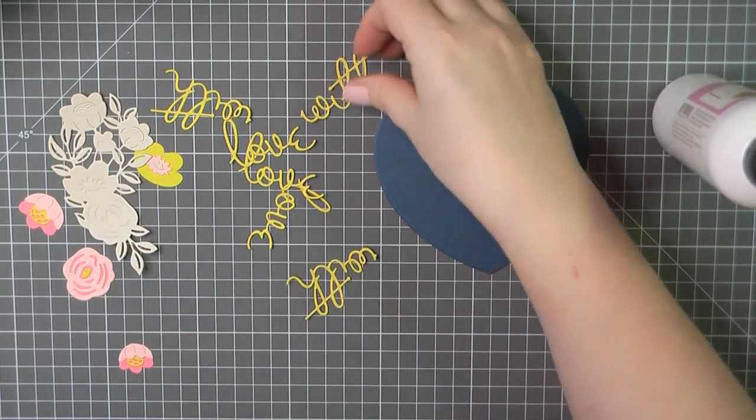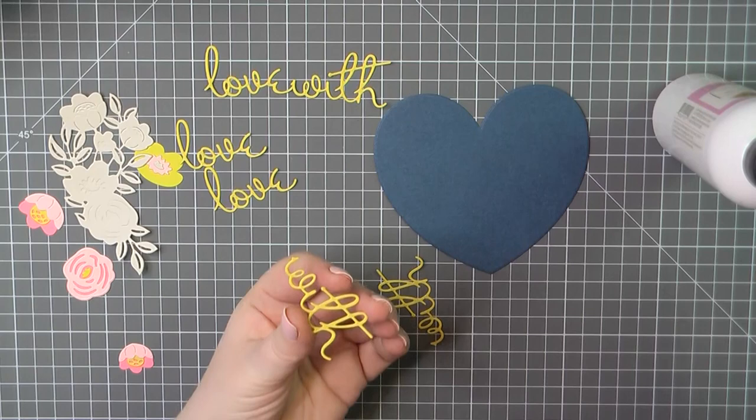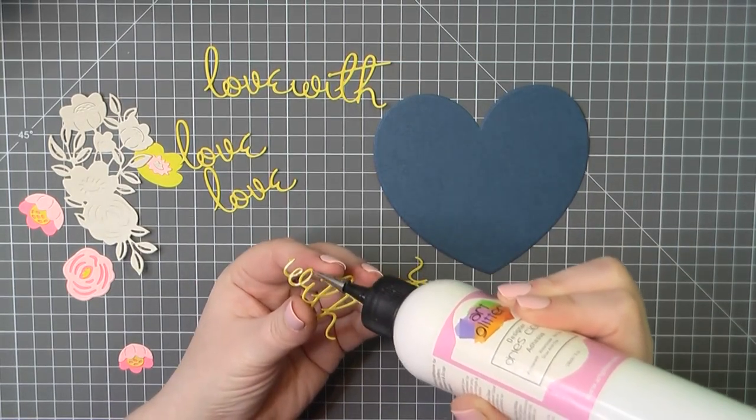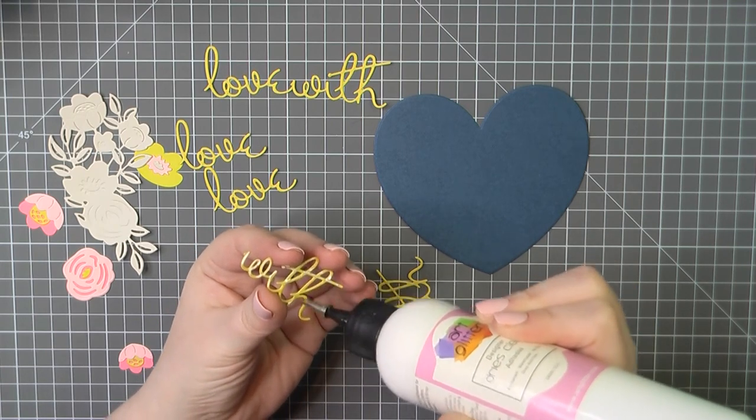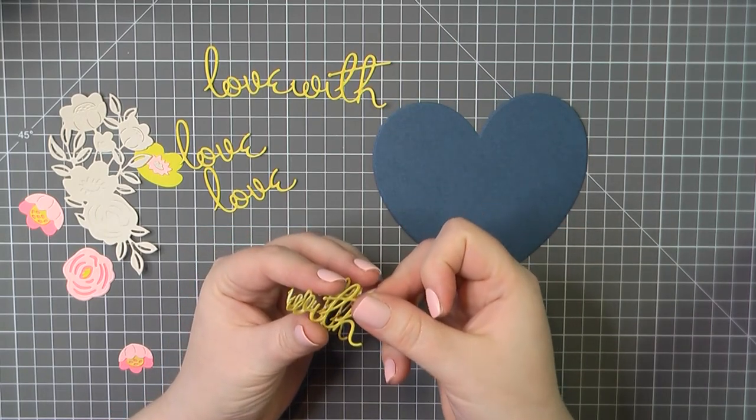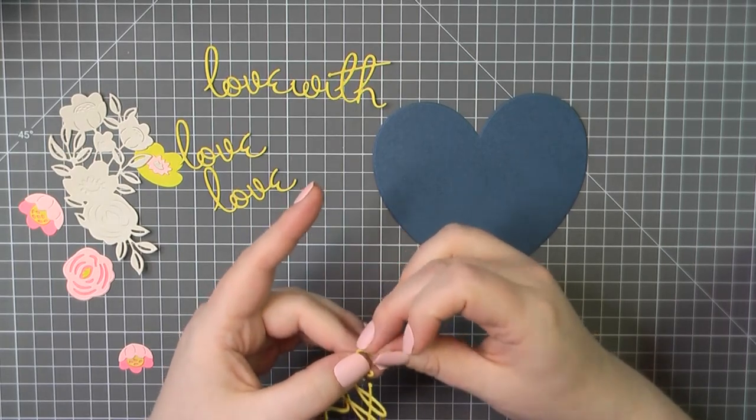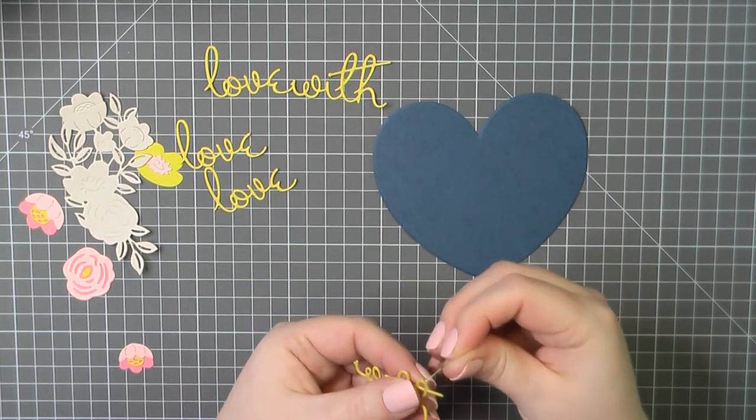I have got two cards to share with you that I have put together using the Spellbinders December 2022 large die set. If you want to know how to put this full set together, you can see that in the video I posted yesterday, which is the Just the Cuts video. It gives you the full details of how to layer everything and place that together. Today I've got two different designs that I am creating using the same set.